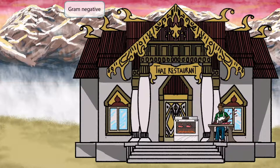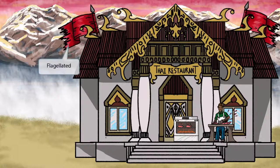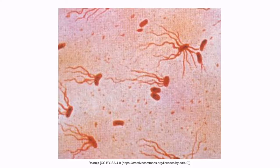Pay close attention to the background. Notice that we've made the sky pink, which is to help you remember that this is a gram-negative organism. Now we've added two flags on top of the roof — the flags are here to help you remember that Salmonella Typhi is flagellated. This is a gram stain of Salmonella: notice that it appears red or pink under the microscope, is rod-shaped, and is a flagellated organism. You can see the flagella right here.